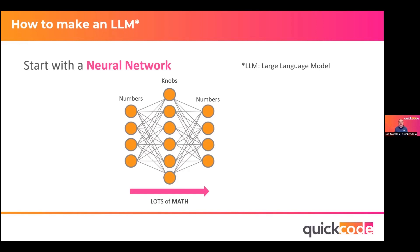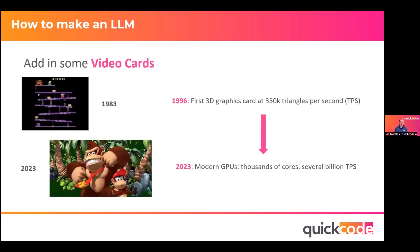So that's what you start with. Then what do you add? You add some video cards. Back in 1983 this was Donkey Kong. In 2023, 43 years later, same video game — very different look. How did we get there? Well, the invention of video cards. In 1996 was the first 3D graphics card at 350,000 triangles per second. In 2023, we have modern GPUs that have thousands of cores and can do several billions of triangles per second.